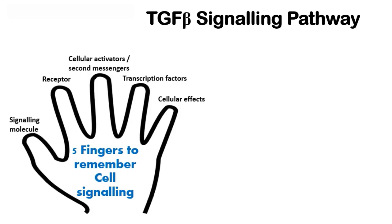We've been talking about signaling pathways with the help of the five finger concept, and again using this concept we can remember the TGF beta signaling pathway quite easily. We first need to talk about all five important parameters of cell signaling, and in the second part of the video I'm also going to tell you the step-by-step process of TGF beta signaling.